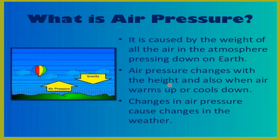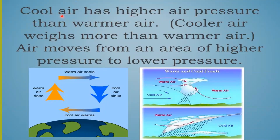Air pressure changes with height and also when air warms up or cools down. Changes in air pressure cause changes in weather. When air gets heated, it expands, becomes less dense and lighter, and naturally rises up. Whereas when temperature drops and air cools down, the density of air increases, resulting in high pressure. Cool air has higher air pressure than warmer air because warmer air always expands, while cool air sinks down. Air moves from an area of higher pressure to lower pressure.